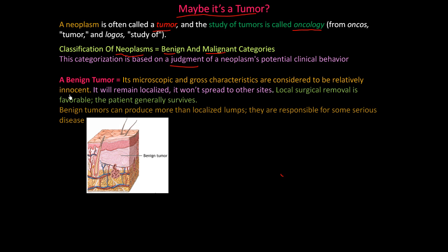A benign tumor — its microscopic and gross characteristics are considered to be relatively innocent. When you look at it on a gross or microscopic level, it's abnormal, but it's not going to kill you. It will remain localized usually and won't spread to other sites. Local surgical removal is favorable — if you go in and cut it out, it hasn't spread everywhere and it's not going to. It usually stays local, and patients usually survive these benign tumors.